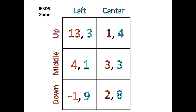If player 2 is never going to play right, should player 1 ever play down? The answer is no, because middle now strictly dominates down. This 4 is greater than this negative 1 if player 2 goes left, and if player 2 goes center, then 3 is greater than 2. So regardless of whether player 2 plays left or center — the only two reasonable strategies for her since right is not reasonable — player 1 should never want to play down.